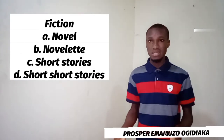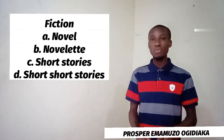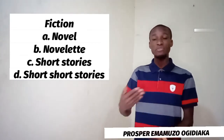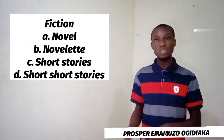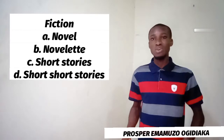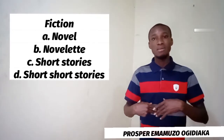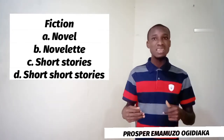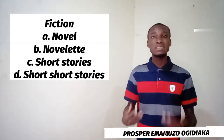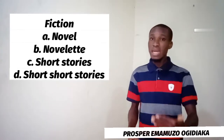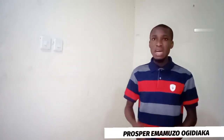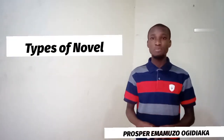A short short story is even shorter — some of the ones you find in English textbooks or in children's storybooks can be read in the space of one to thirty minutes. That is it for fictional prose. Now let's talk about the types of novels.